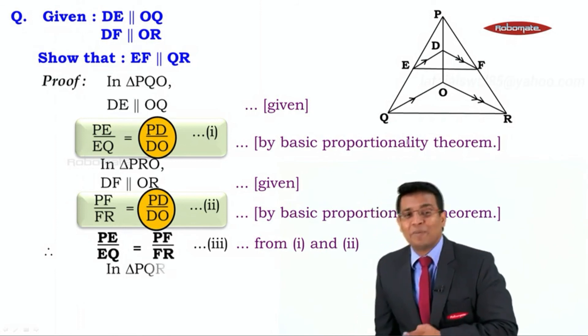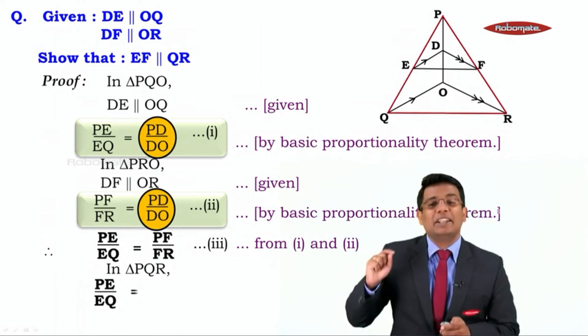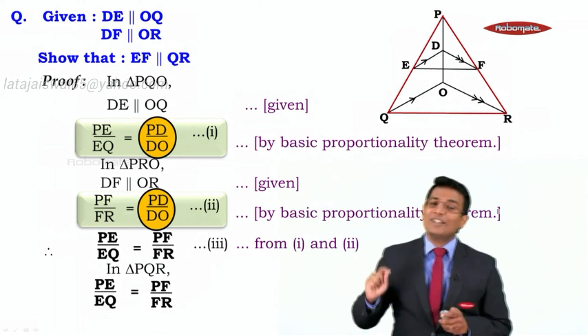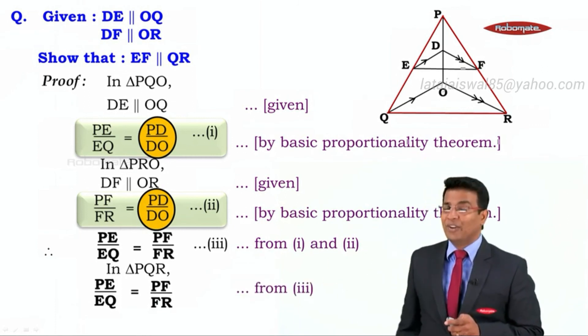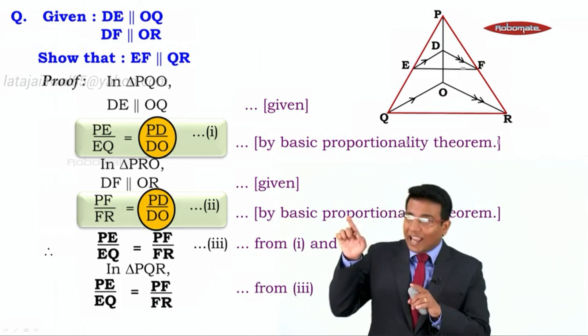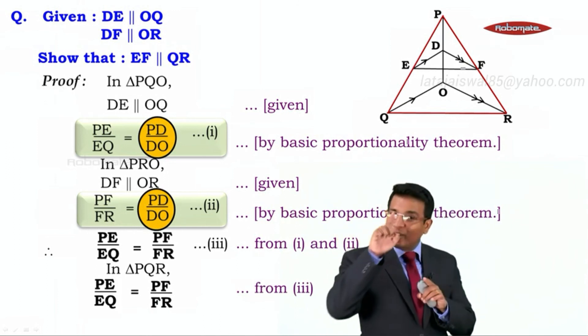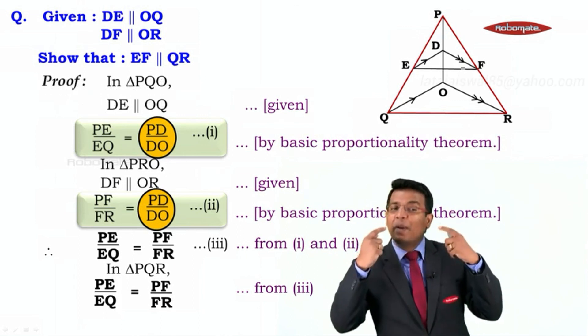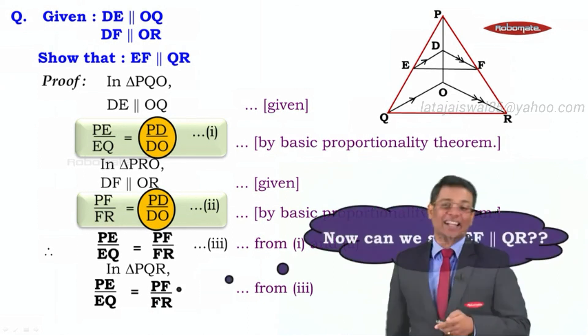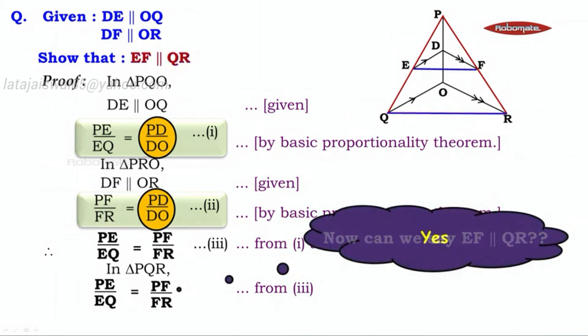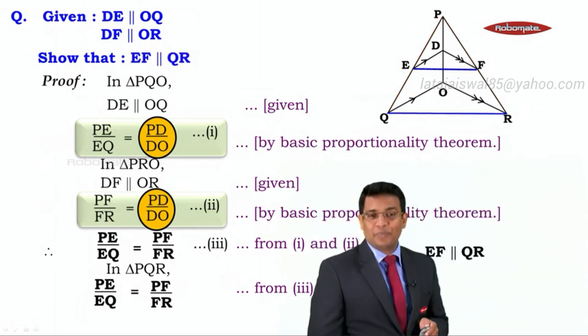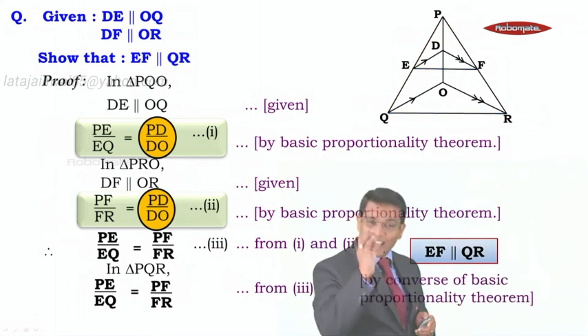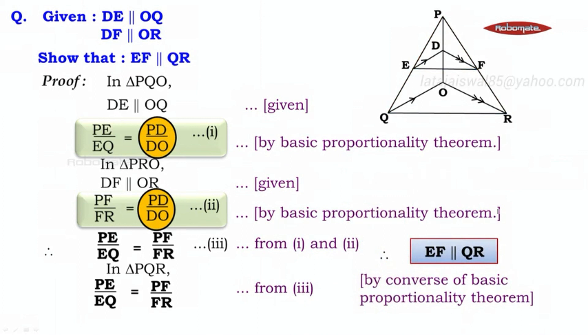We got PE upon EQ equal to PF upon FR in triangle PQR. In this triangle, line EF intersects sides PQ and PR with equal ratios. Therefore, by the converse of the Basic Proportionality Theorem, we conclude that EF is parallel to QR — and the proof is complete.